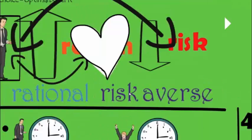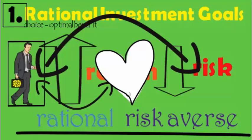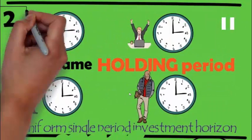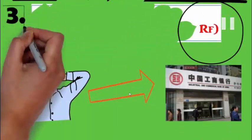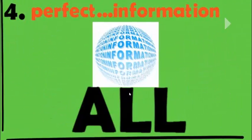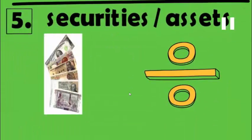So first let's revise again what were the five. The first one, investors have rational investment goals. They are rational towards return and they are risk averse. The second was there is uniform single period investment horizon. The third, investors can borrow and lend any amount at RF as much as the investors want or desire. The fourth, perfect information is available not to one but to all investors. The fifth, securities are liquid, that is they can be easily converted into cash and they are divisible.